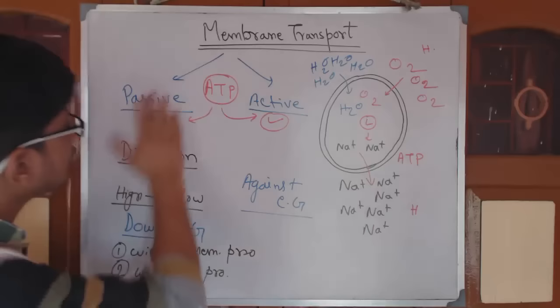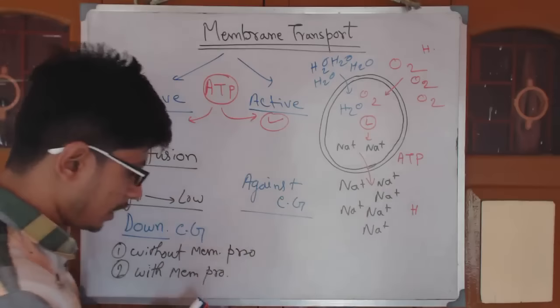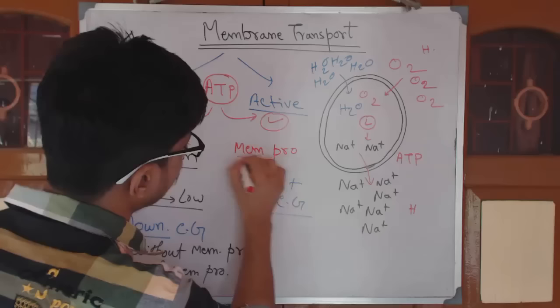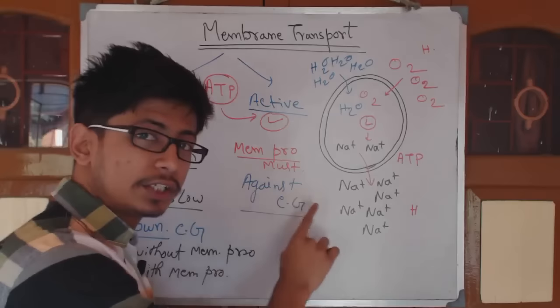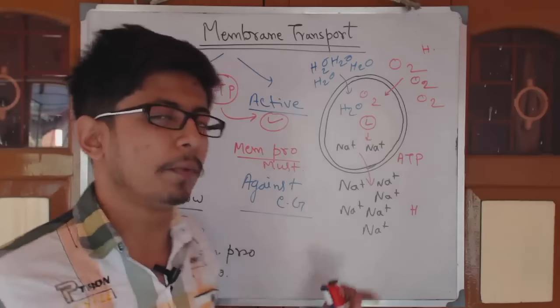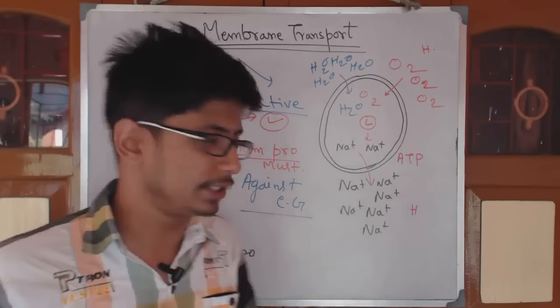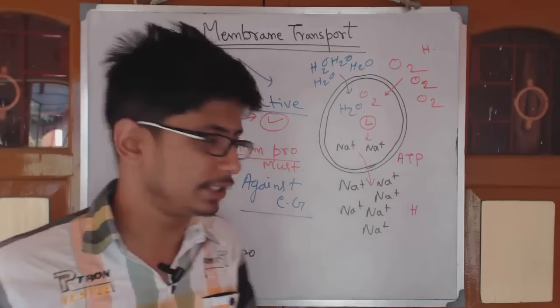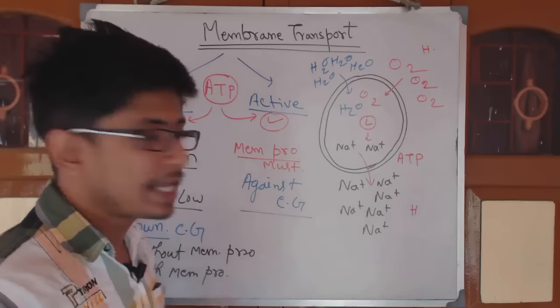Active transport can never occur without a membrane protein — a membrane protein is always required. Active transport requires energy via ATP hydrolysis and goes against the concentration gradient. Active transport is of two types: primary active transport, where ATP is required directly, and secondary active transport.